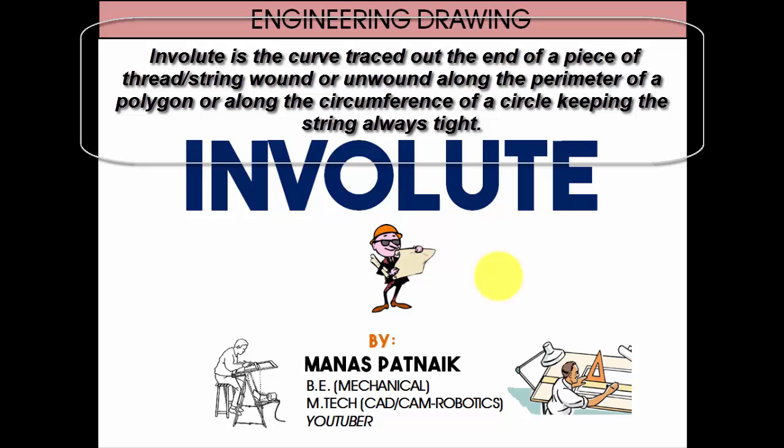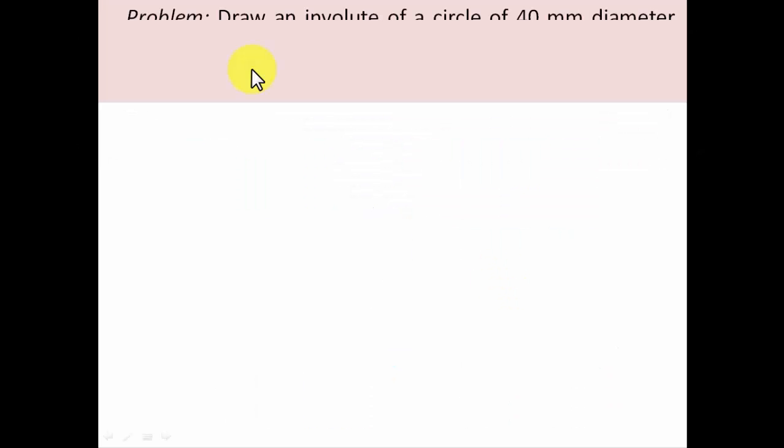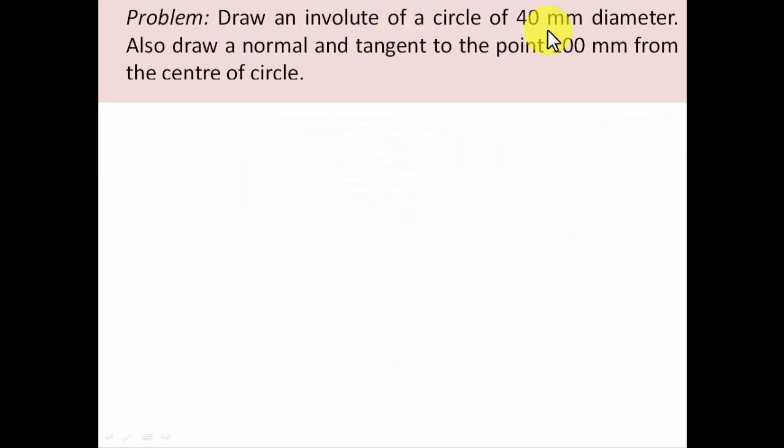Now let's understand this with the help of a problem. Draw an involute of a circle of 40 mm diameter. Also draw a normal and tangent at a point 100 millimeters from the center of the circle.